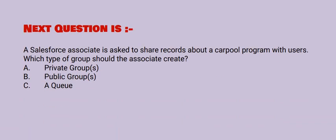Next question: a Salesforce associate is asked to share records about a carpool program with users. Which type of group should the associate create? Option A: private groups. Option B: public groups. Option C: a queue. The correct option is option B.